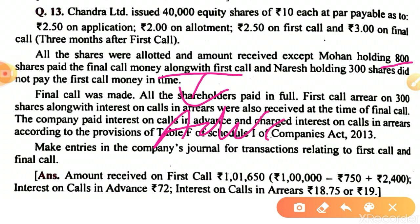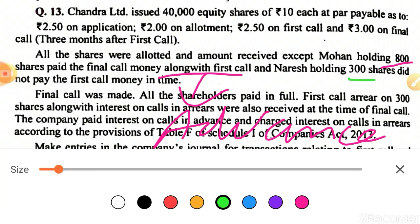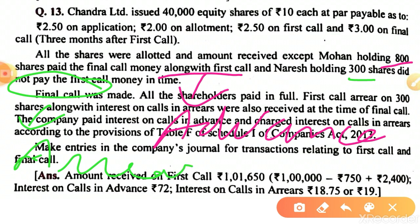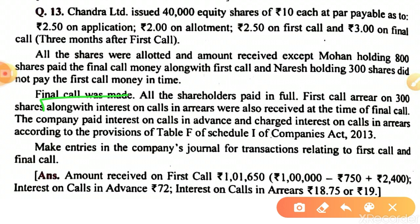Mohan has paid in advance — final call money with the first call. Naresh holding 300 shares did not pay the first call, which is calls in arrear. At the time of the final call, all shareholders paid in full. Naresh paid the first call on 300 shares along with interest at the time of the second and final call.